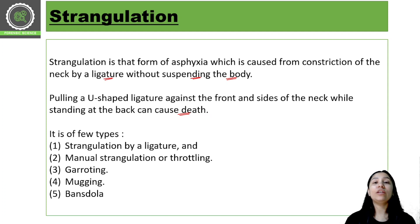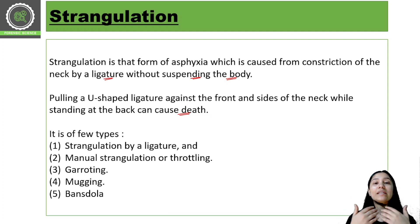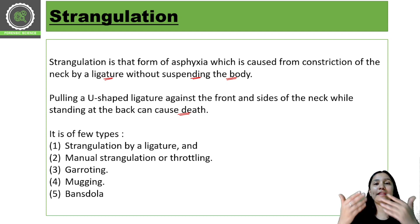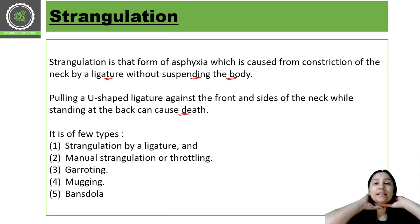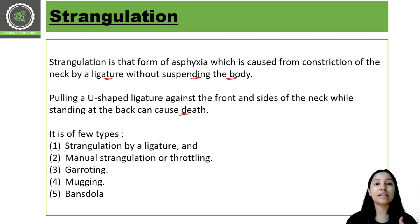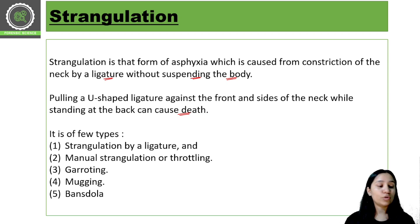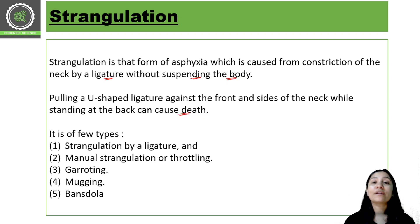In manual strangulation, the fingers typically come behind the neck and the thumbs are on the front side of the neck, so pressure is applied mainly with the thumbs. This creates different types of marks over the neck and also comes under strangulation.